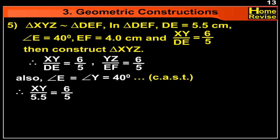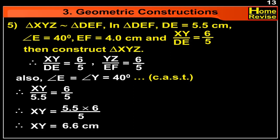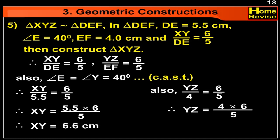Therefore, XY upon 5.5 is equal to 6 upon 5. Therefore, XY is equal to 5.5 into 6 upon 5, which gives XY equal to 6.6 cm. Therefore, YZ upon 4 is equal to 6 upon 5. Therefore, YZ is equal to 4.8 cm, approximately 4.6 cm.